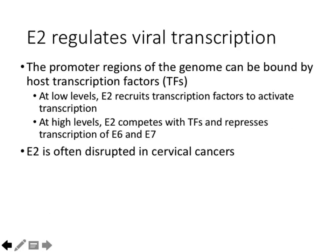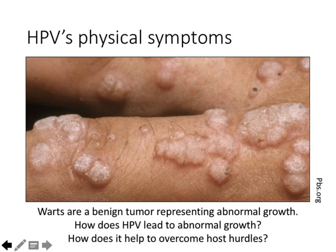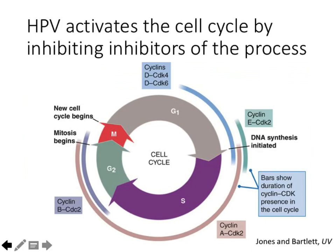We can think of warts as being like a benign tumor — a tumor is any abnormal cellular growth, and benign means it's not cancer. HPV triggers this growth, representing the proliferation of cells supporting HPV's life cycle. Somehow it has to force the cell into S phase. The two major proteins, to make a long story short, are E6 and E7.